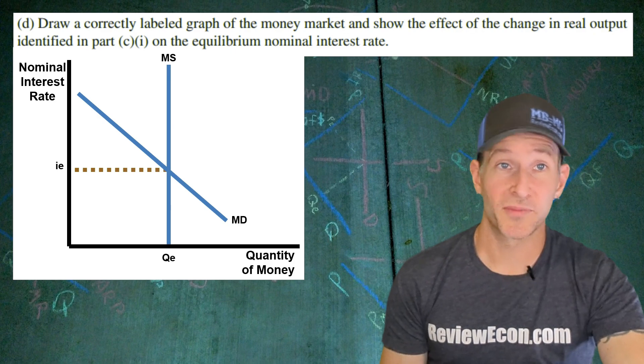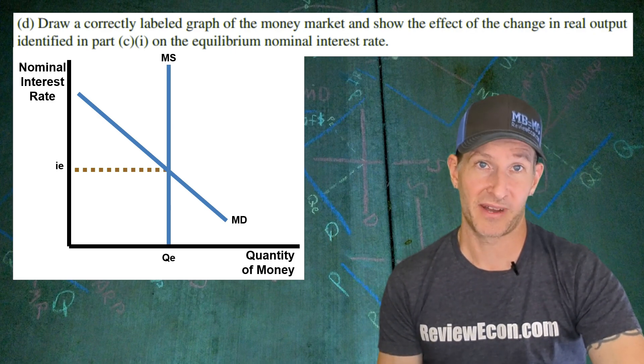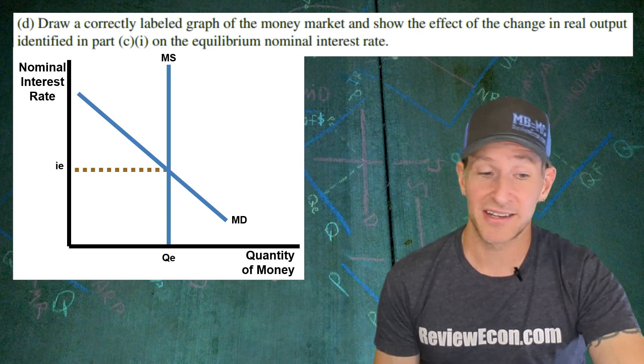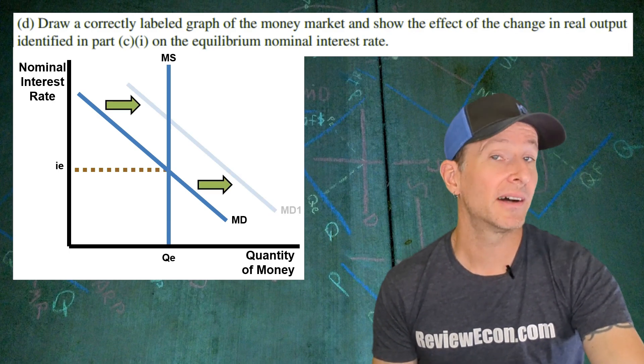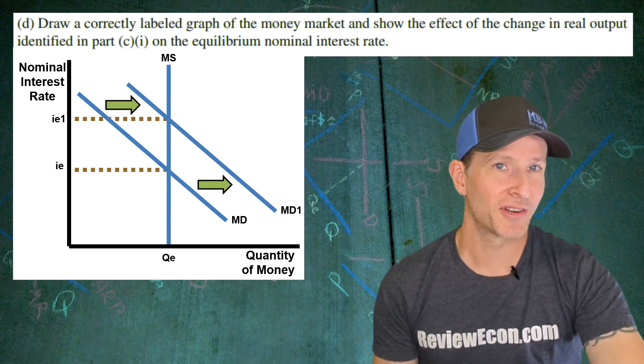The second point comes from understanding that the money demand curve shifts when there are changes in the transaction demand for money. Since we have higher real GDP output we are going to shift that demand curve to the right because more real output means more money will be demanded to process all those transactions.